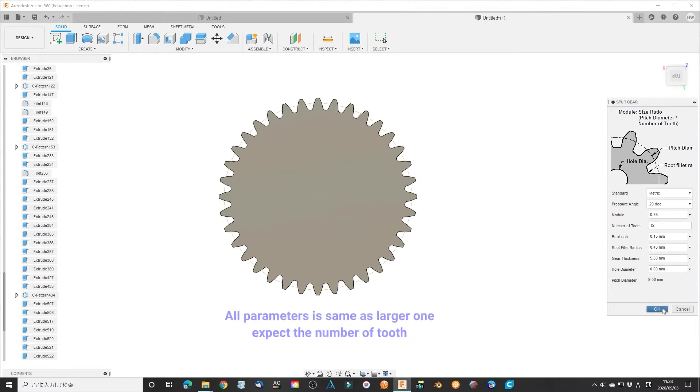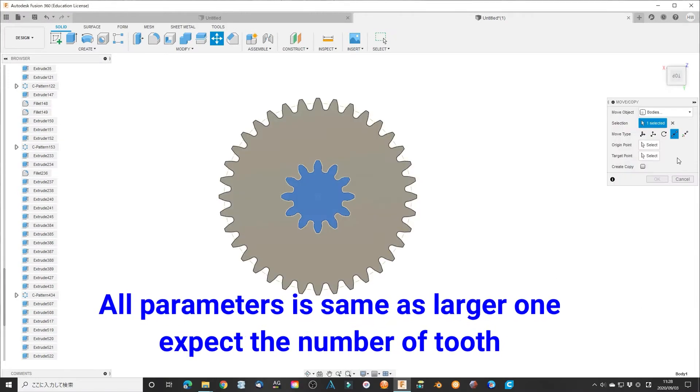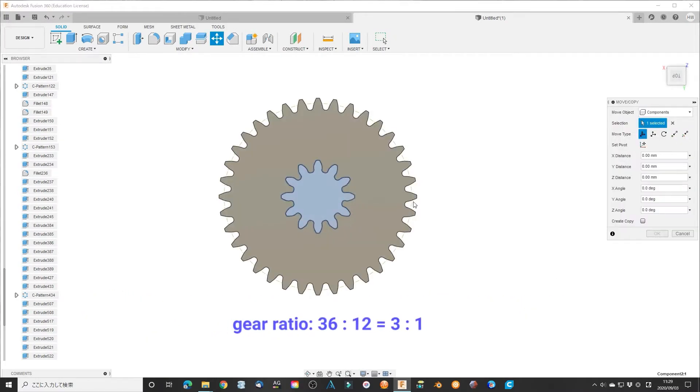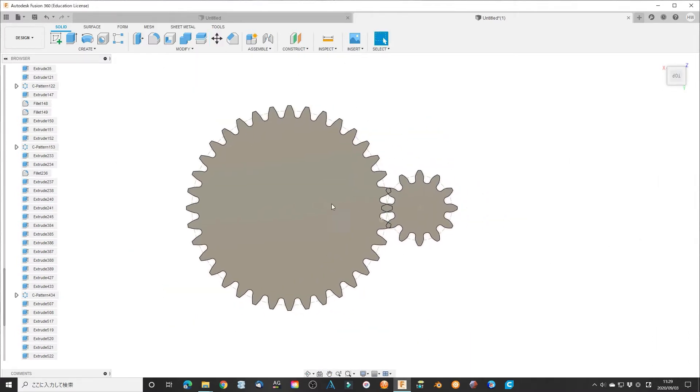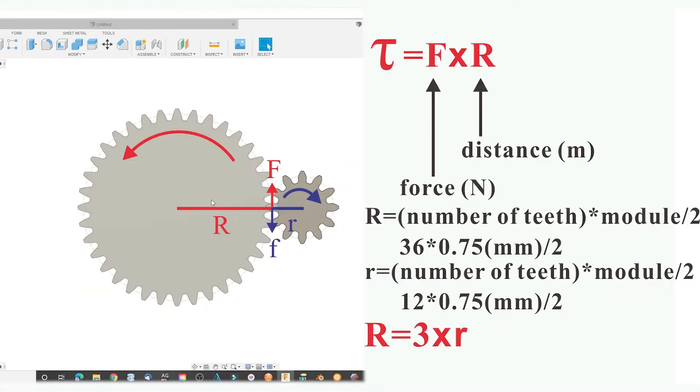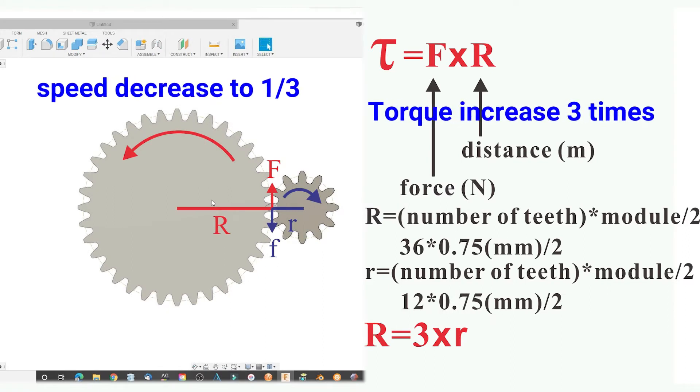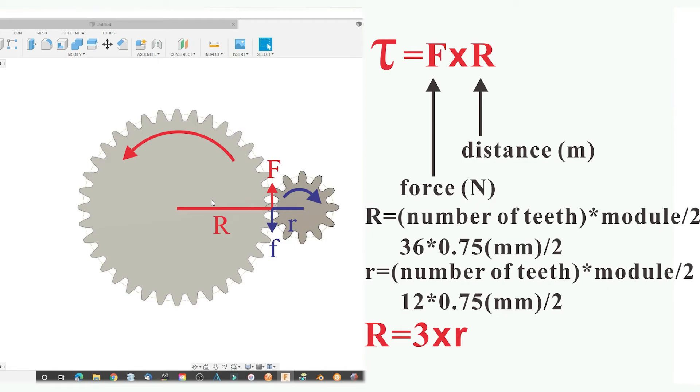Add another gear which has 12 teeth. Now the gear ratio is 36 to 12 equals 1 to 3. According to the theoretical calculation, the speed will decrease to 1 third and the torque will increase 3 times if using this gear once.